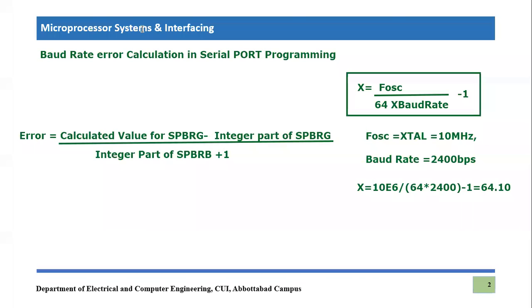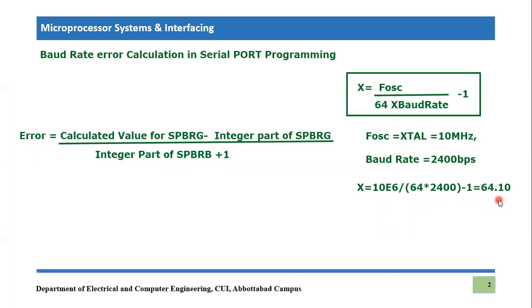If I put the value of 10 MHz, that is 10 to the power 6, divided by 64 times the baud rate, and the baud rate we want to achieve is 2400 bits per second, so 2400 is substituted. If we calculate this value — 10 raised to 6 divided by 64 times 2400 — and then subtract 1, it will be equal to 64.1.